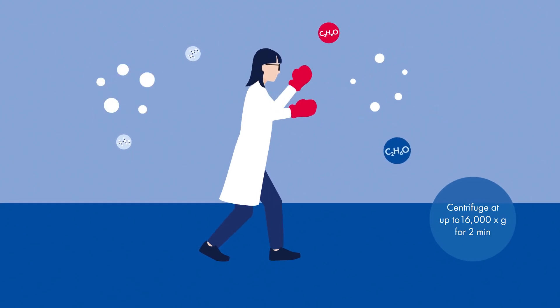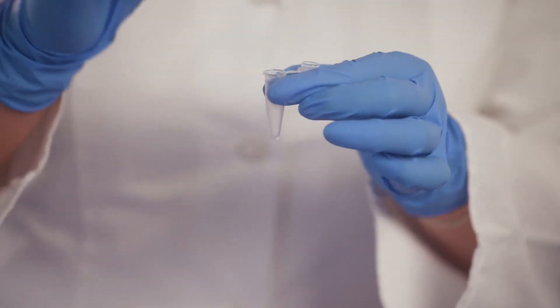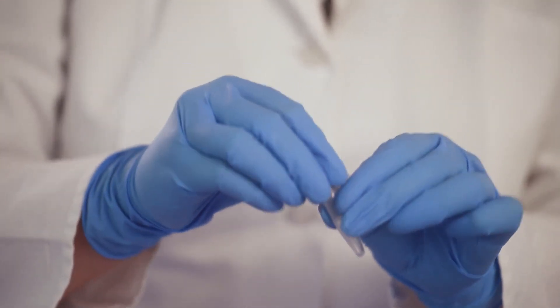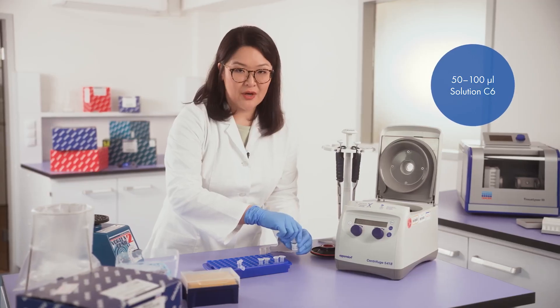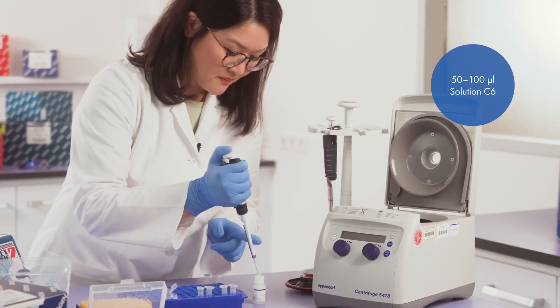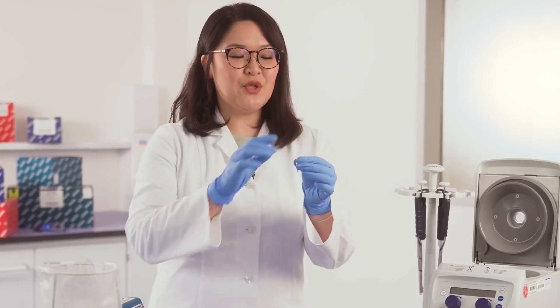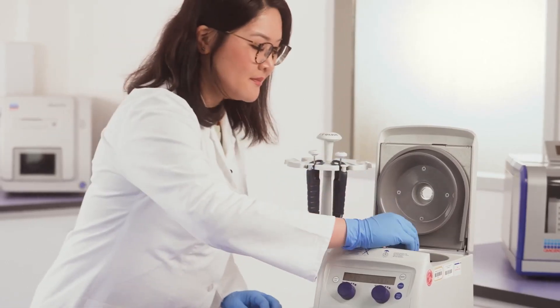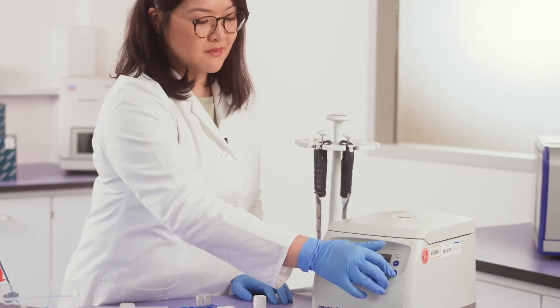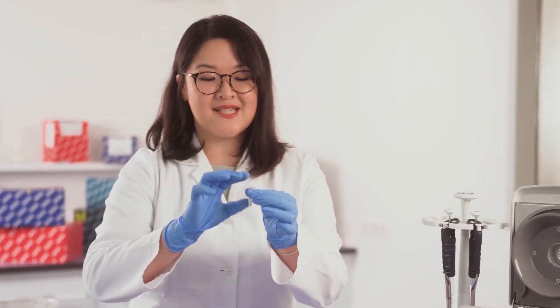Place the MB spin column onto an elution tube and put solution C6 at the center of the membrane to ensure complete release of the DNA. The tube is now ready for the last centrifuge step. Discard the MB spin column and that's it. Your DNA is ready for downstream application.